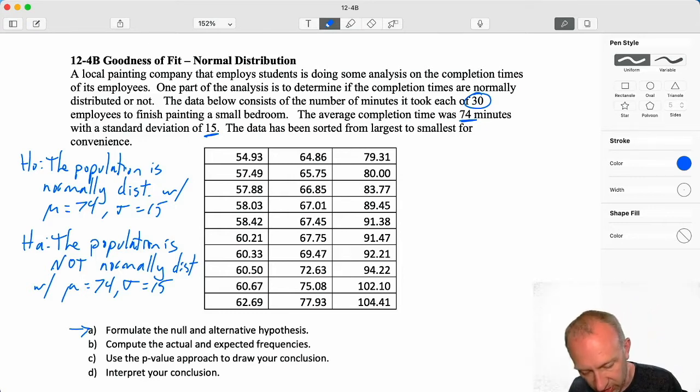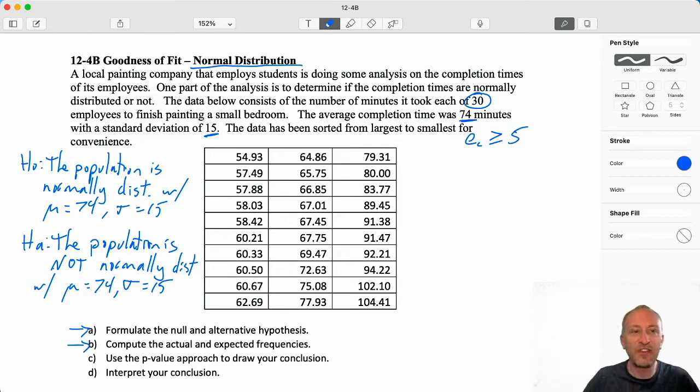Now, first thing we need to do, of course, compute the actual or the observed and the expected frequencies. So what we need to do here is, because we're working with a continuous distribution, we need to set up intervals. How do we set up these intervals? Well, again, we need those expected frequencies to be at least five, and that is just a requirement for this chi-squared test to work. So I want my intervals to contain, I can expect them to contain five observations if the null is true. So if I take my 30 observations, divide that by five, well then that gives me a nice clean six intervals. I'm going to produce six intervals with an expected frequency of five in each one of them. And that, of course, adds to 30.